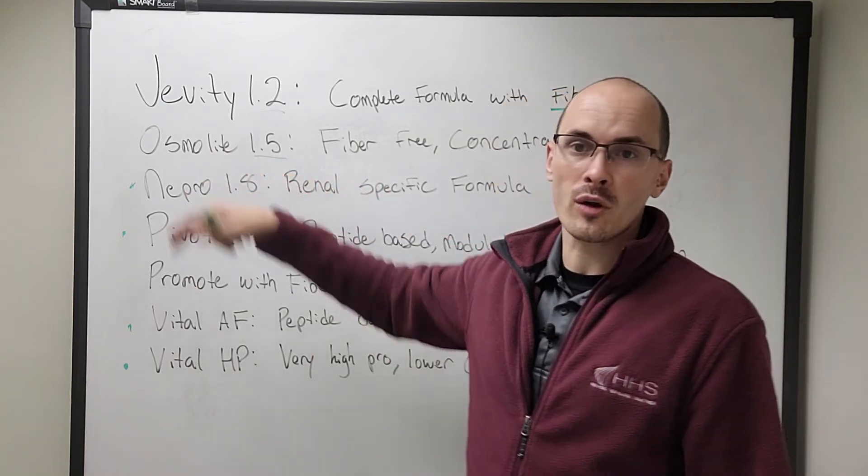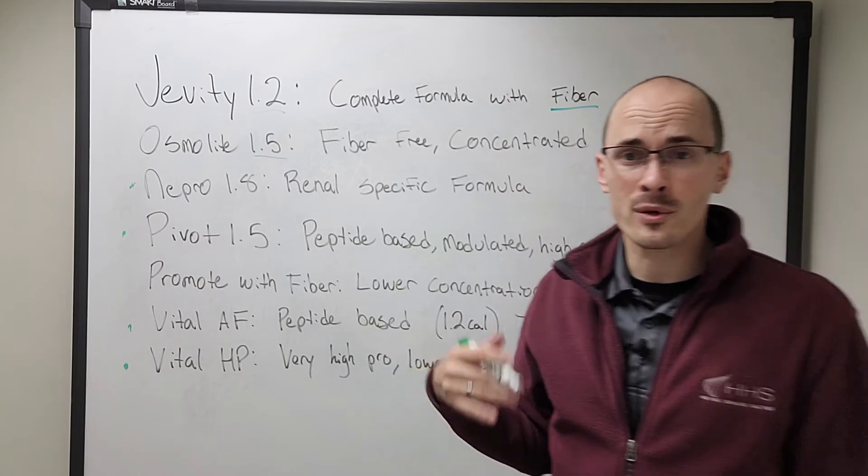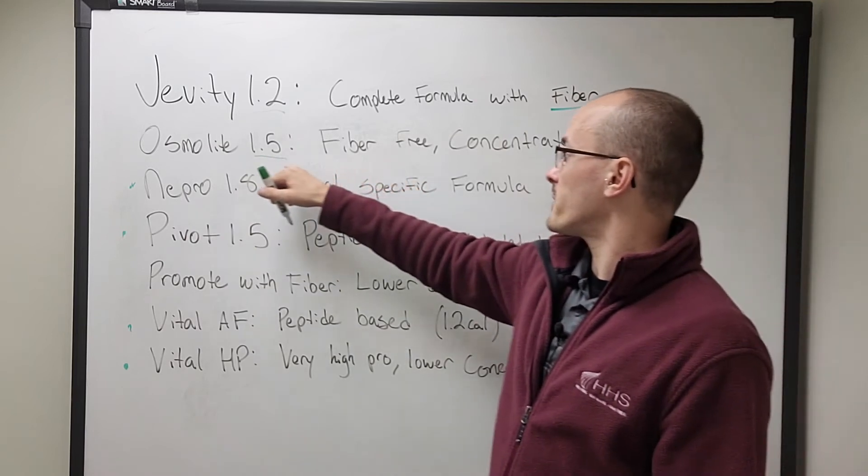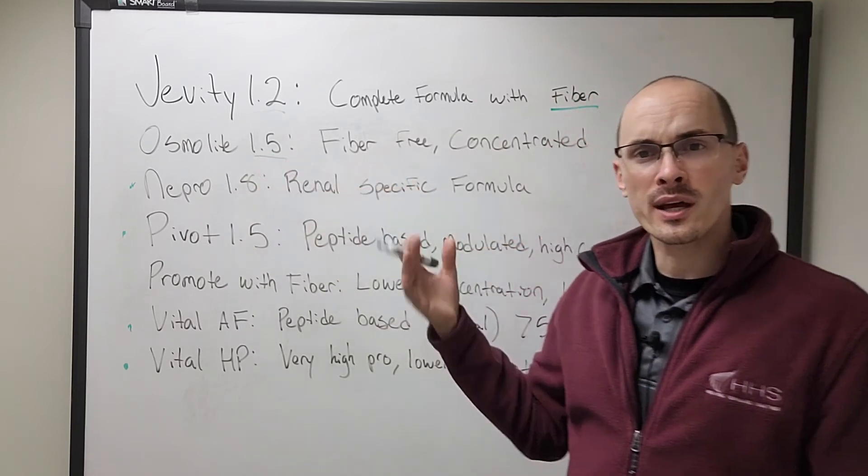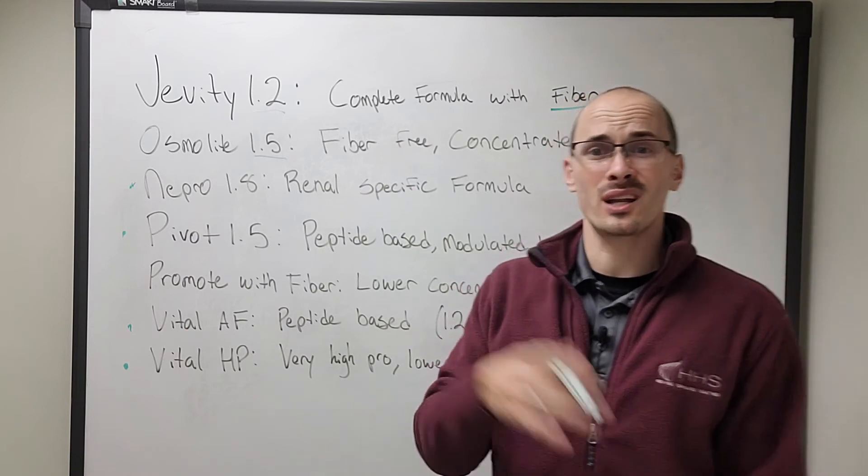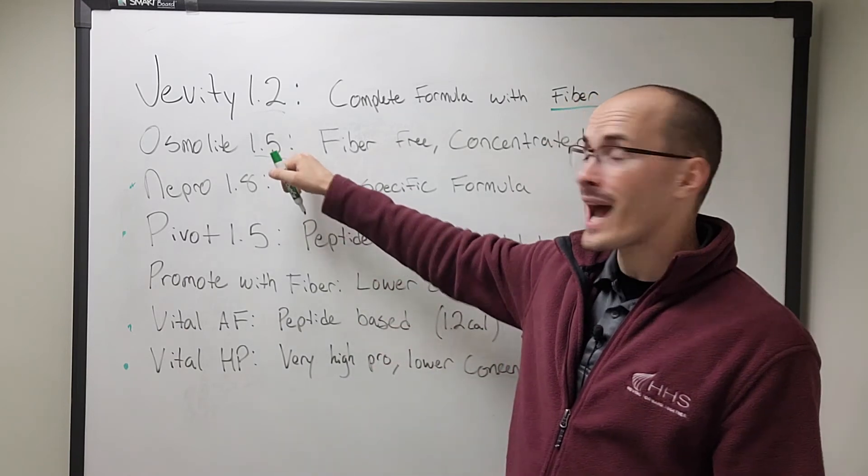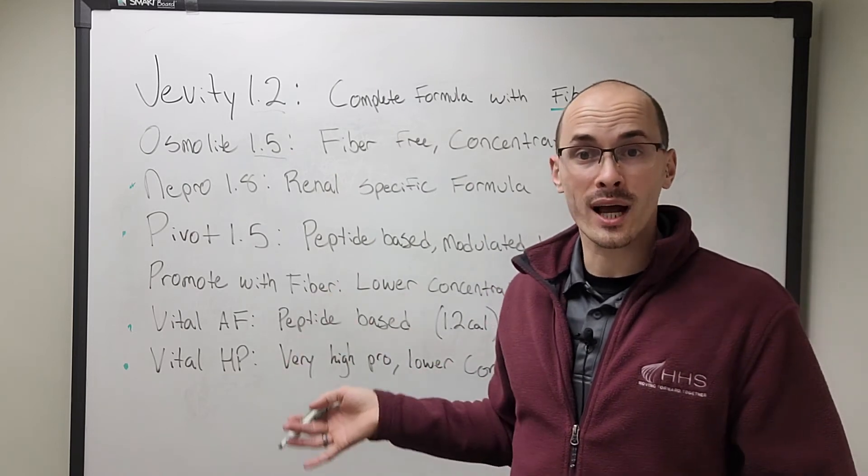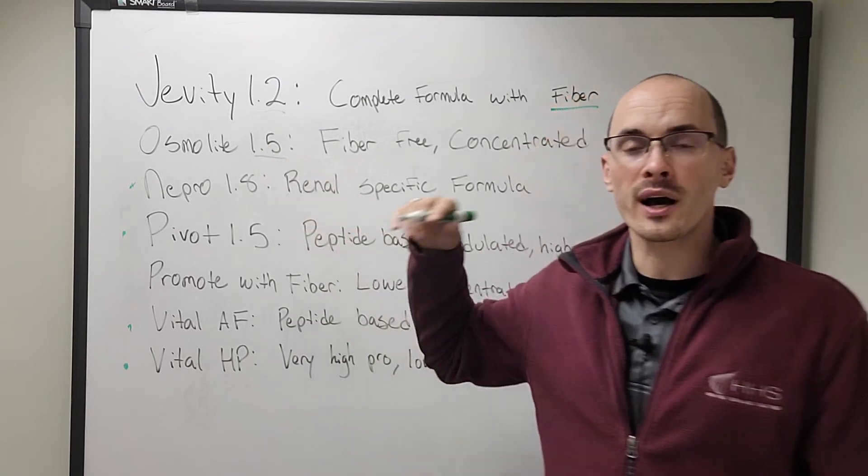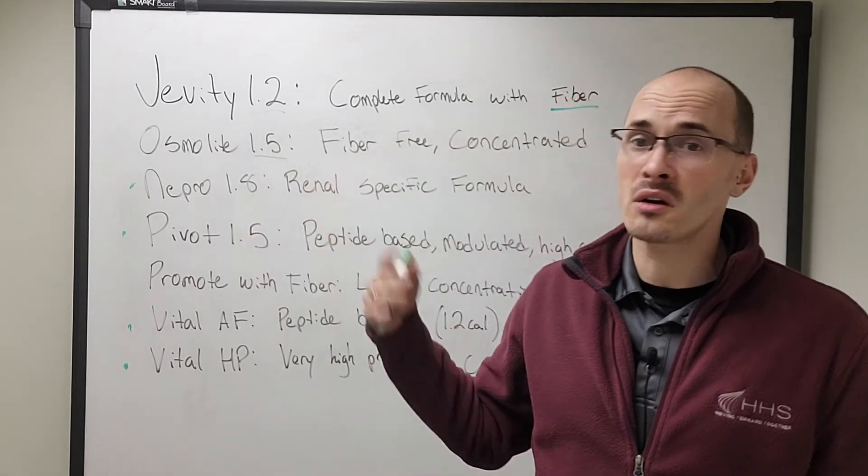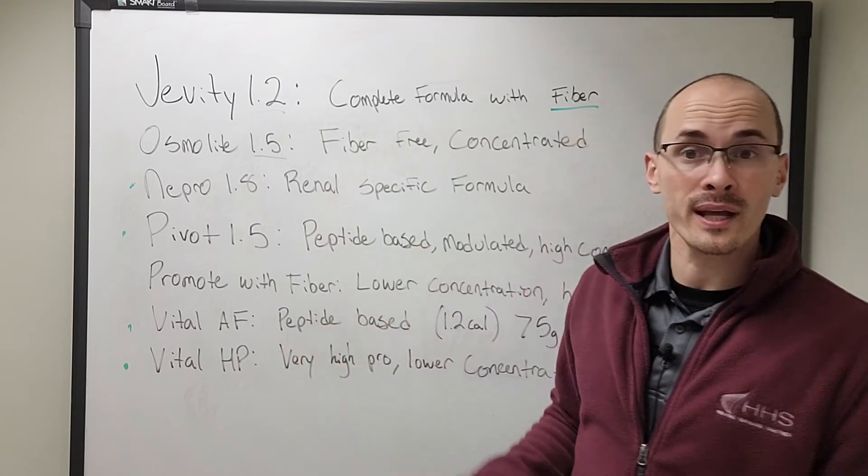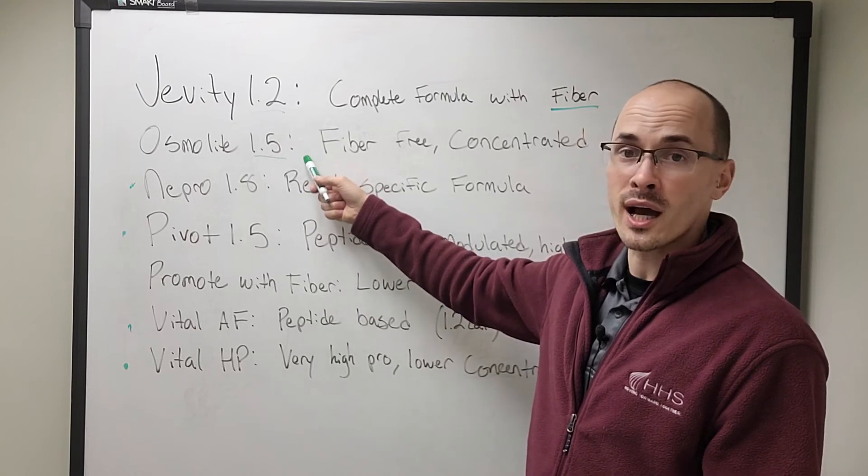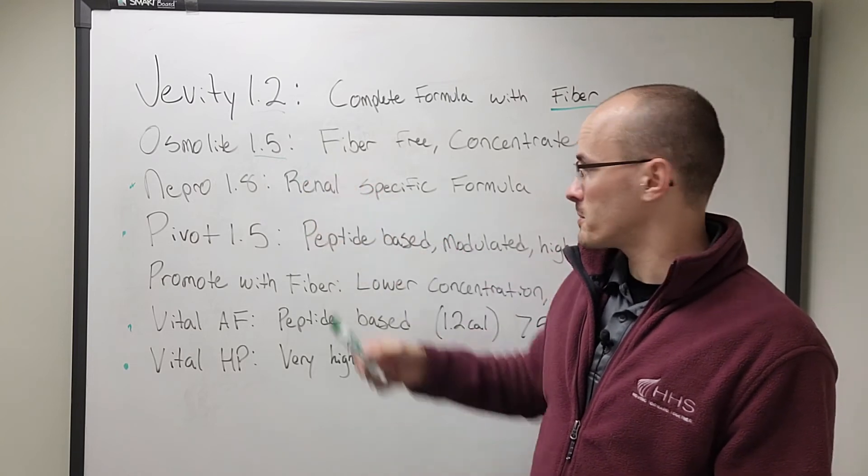So this is going to be used for our patients that maybe shouldn't get fiber. Let's say they're just after GI surgery, or they need a 1.5. They have a lot of calorie needs. Maybe they have slightly high protein needs, but not a lot of protein, but more or less their calorie needs are very high. So if you have someone that needs 2,500 or 3,000 calories, you can meet that need with Osmolyte without running it at 120 or 150 mils an hour, and still give your patient at least 100 grams of protein. So this is a really good option for those high calorie patients and our low fiber patients.